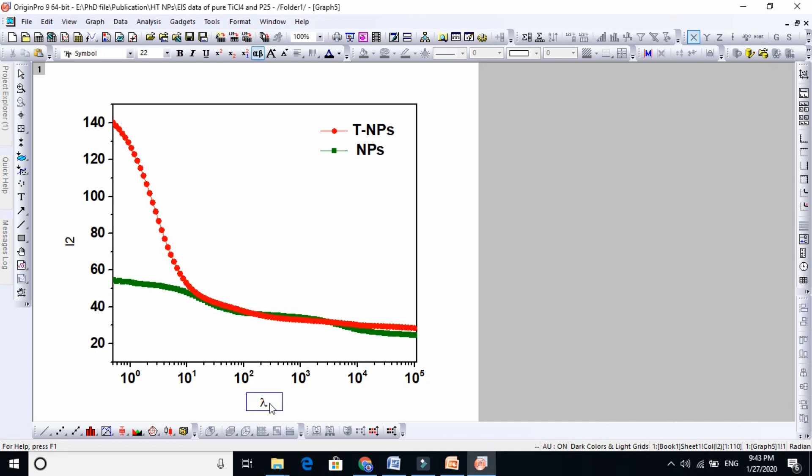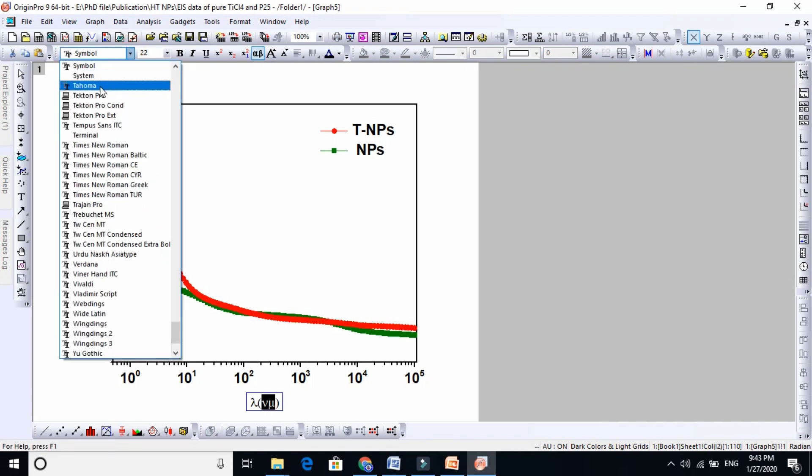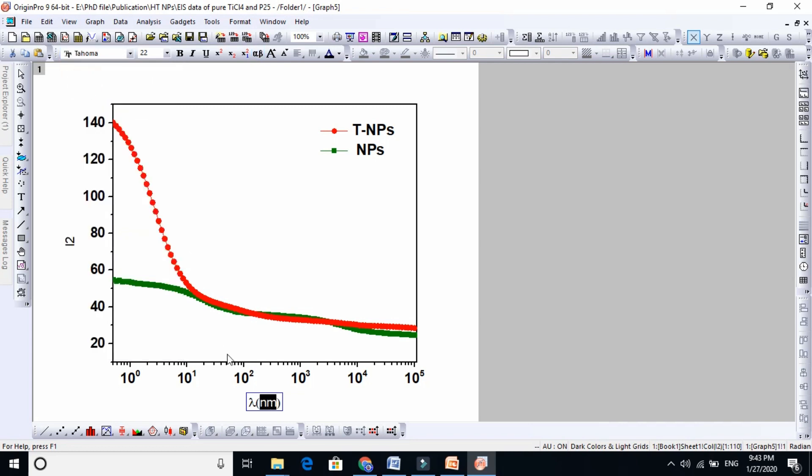If you want to use the unit in nanometer, just write here nanometer. But this is now in symbol form, so you need to change this symbol from this place into text here, and any kind of text you can use: Times New Roman or Tahoma. Now it is here, you see.